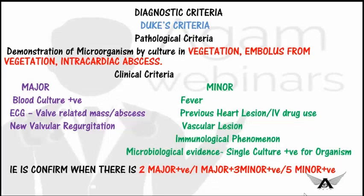Additional minor criteria include immunological phenomena — FSGN, Roth spots, and Osler nodes — and microbiological evidence including a single positive culture. According to Duke's criteria, infective endocarditis is diagnosed if the patient has any two major criteria, or one major criterion with three minor criteria, or all five minor criteria.